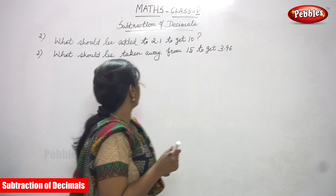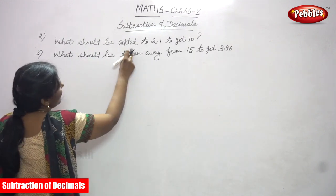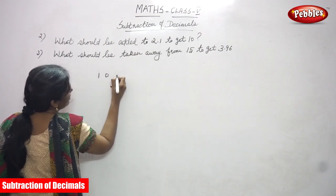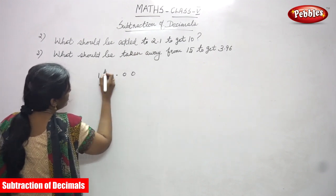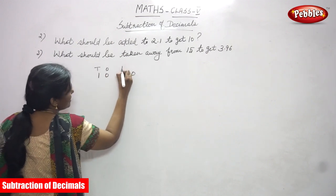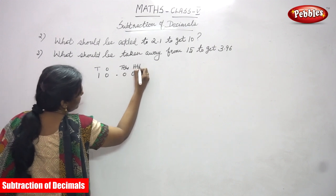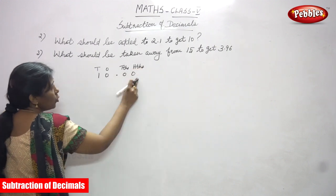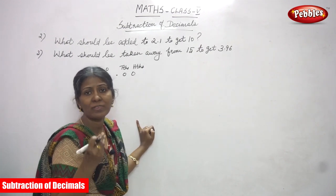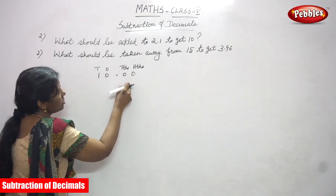I will do the sum. The question is: what should be added to 2.1? So, you have to subtract from 10. This is the 1's place, this is the 10's place, and this is the 100's place. There is no number for the 10's place and 100's place in 10, so we have written zeros there — double zeros.